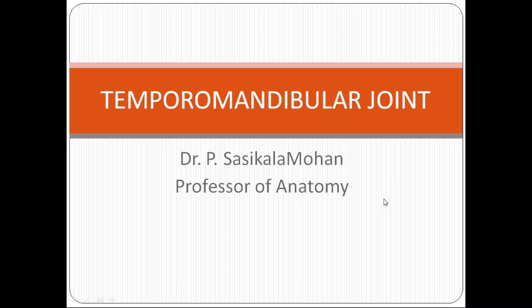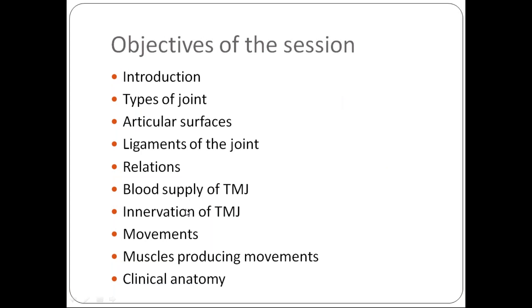We are going to see about the temporomandibular joint under the following headings, which apply to all joints from the upper limb to the head and neck: introduction and types of joint, articular surface, ligaments, relations, blood supply, nerve supply, movements, muscles producing movement, and clinical anatomy.